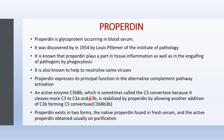Once C5 convertase is formed, it is involved in neutralization of viruses and removal of tissue inflammation by enhancing phagocytosis. Properdin expresses its principal function in the alternative pathway. Properdin mainly exists in two forms: the native form found in fresh serum, and the active form obtained usually on purification.